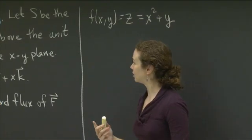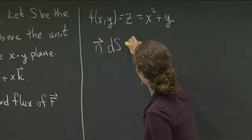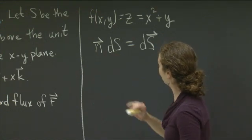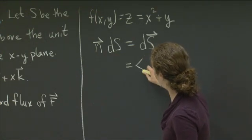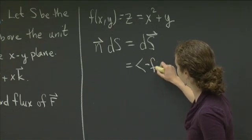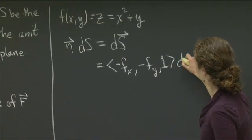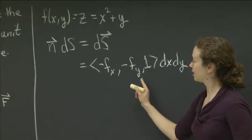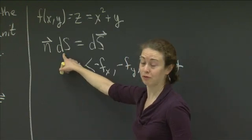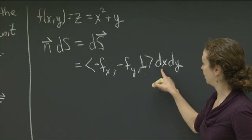And then we know how to compute the normal, well we know how to compute n ds, which is also sometimes written notationally as the vector ds. So we know how to compute this form. And you were shown in class that if your surface is a graph, then this is exactly equal to the vector minus f sub x comma minus f sub y comma 1 dx dy. So n ds is exactly equal to the vector minus f sub x minus f sub y 1 dx dy.